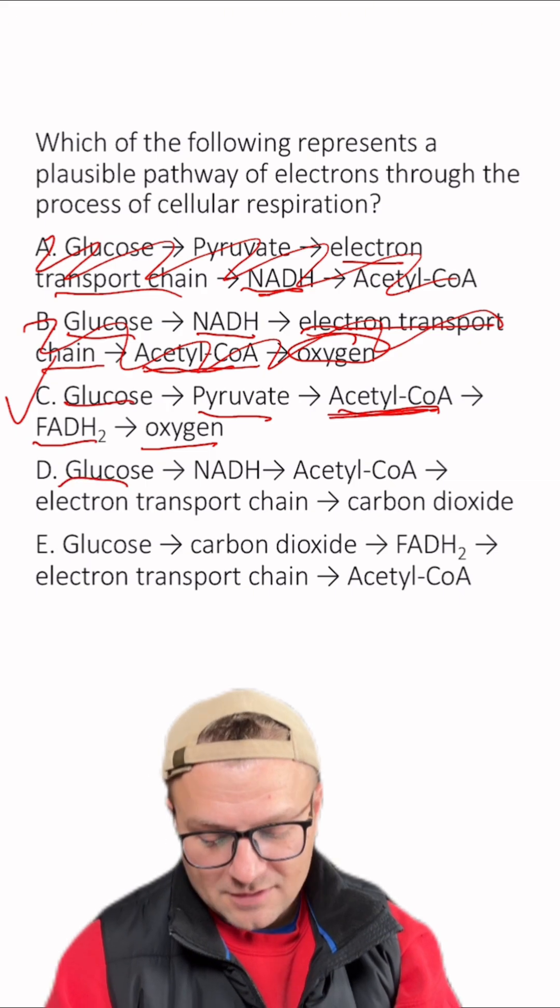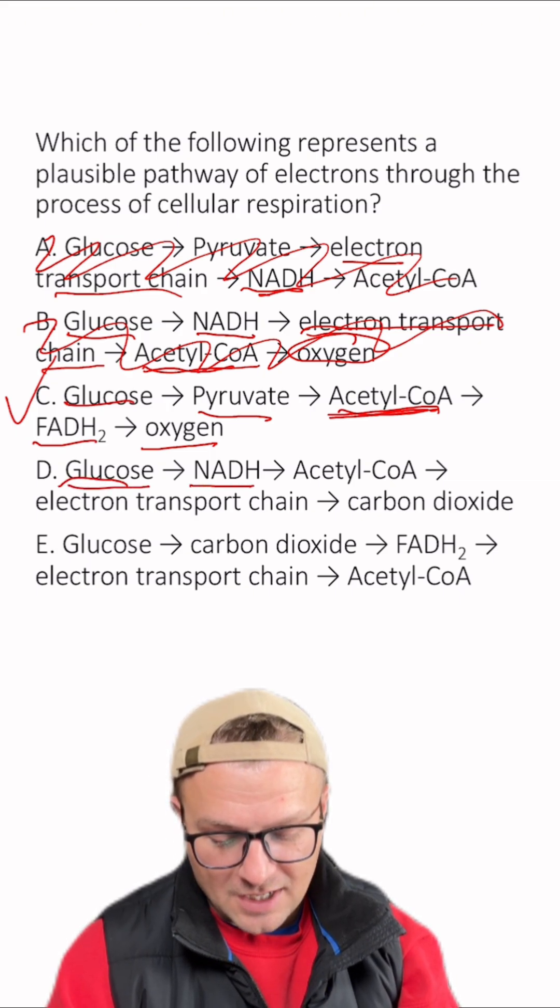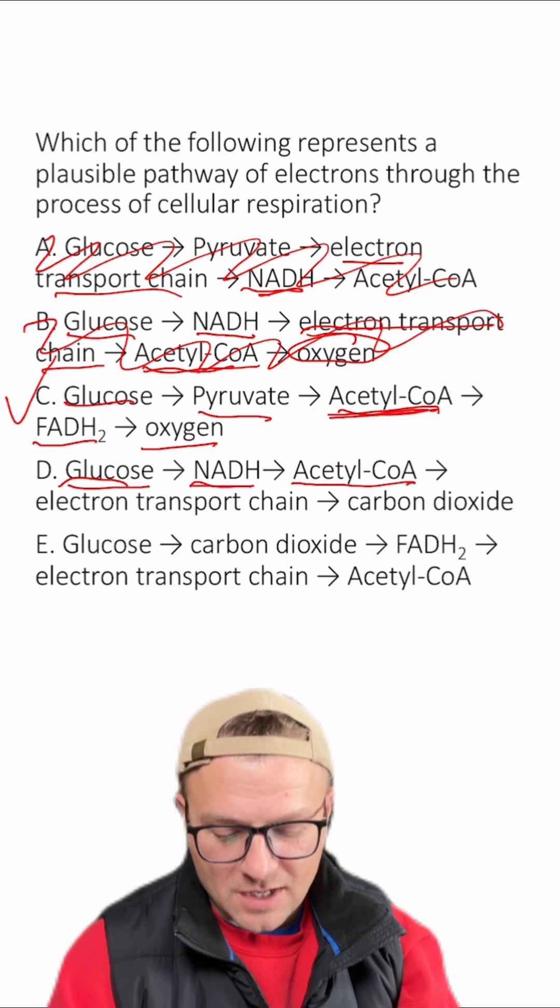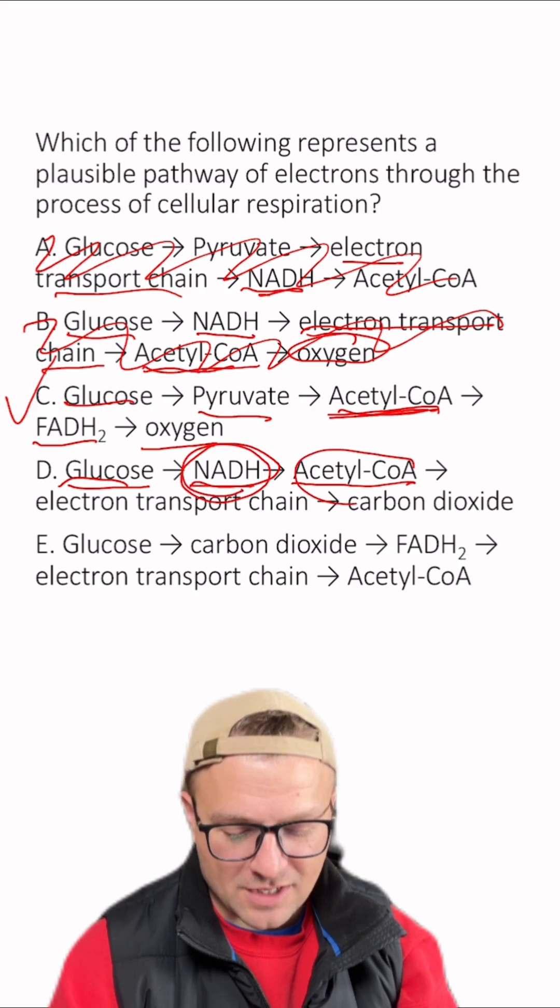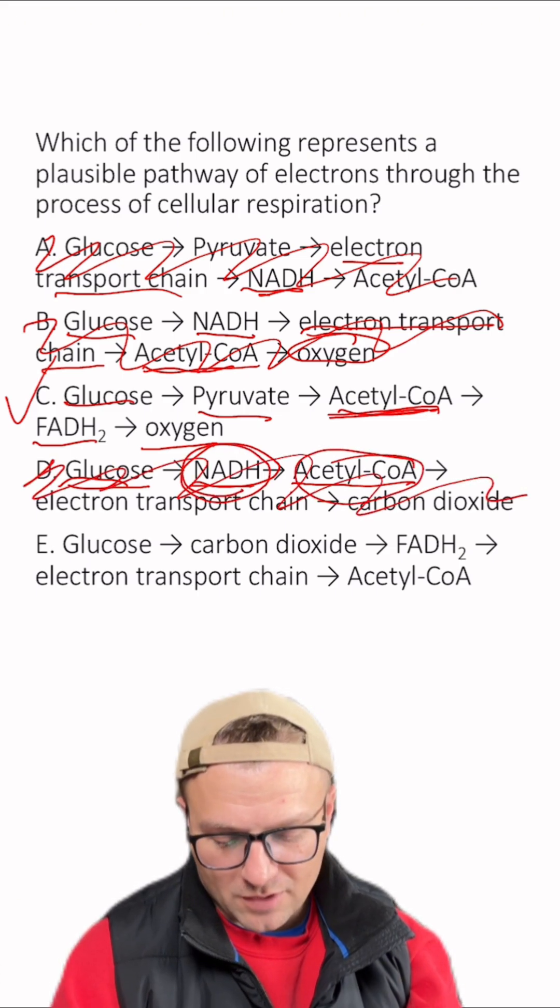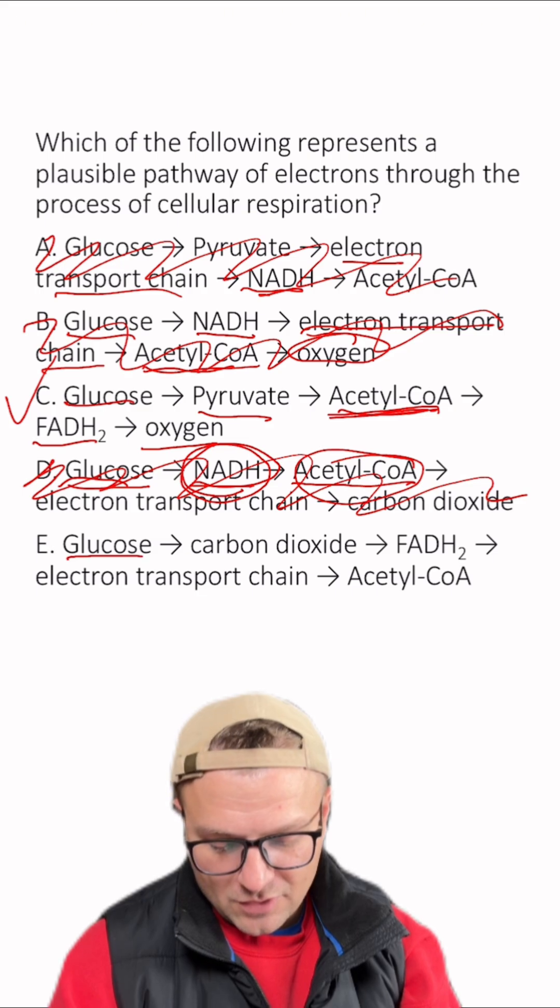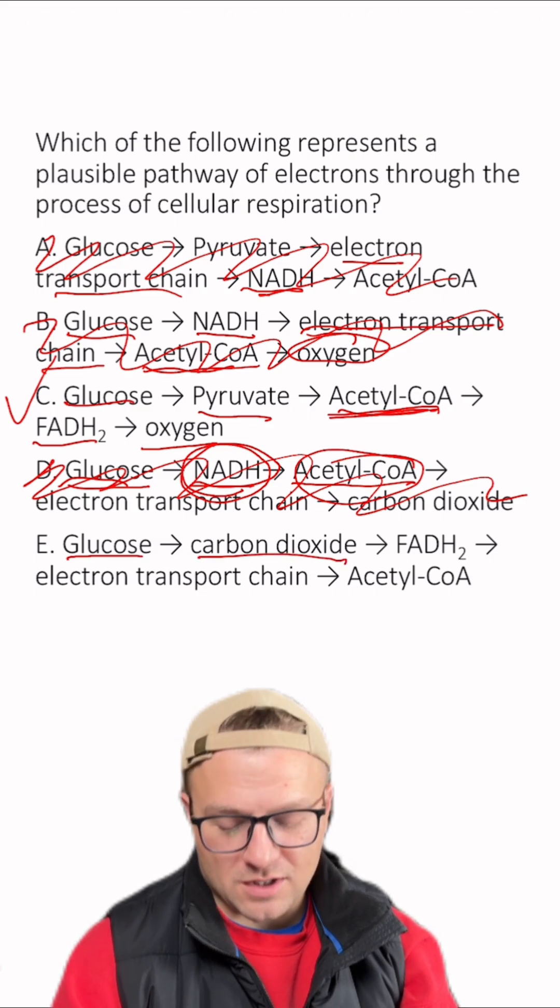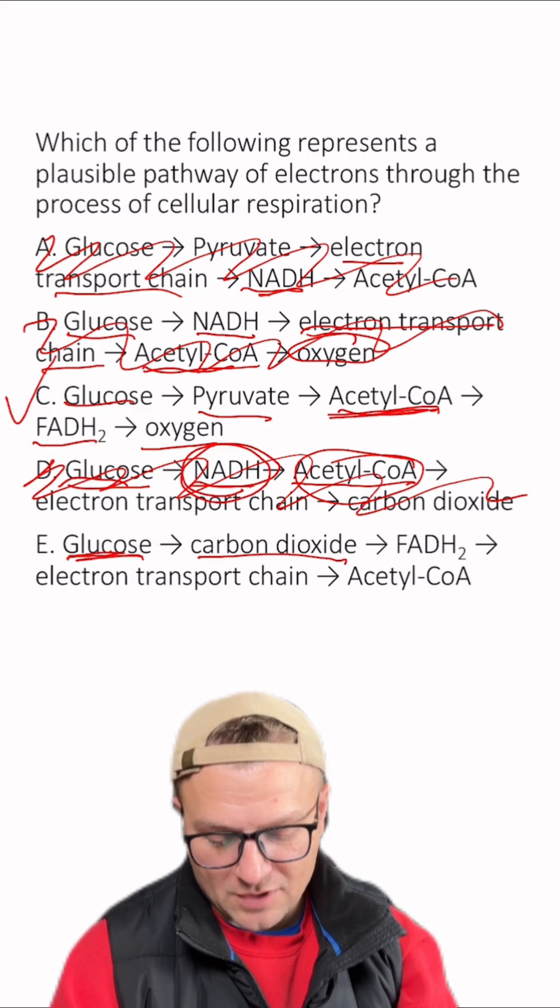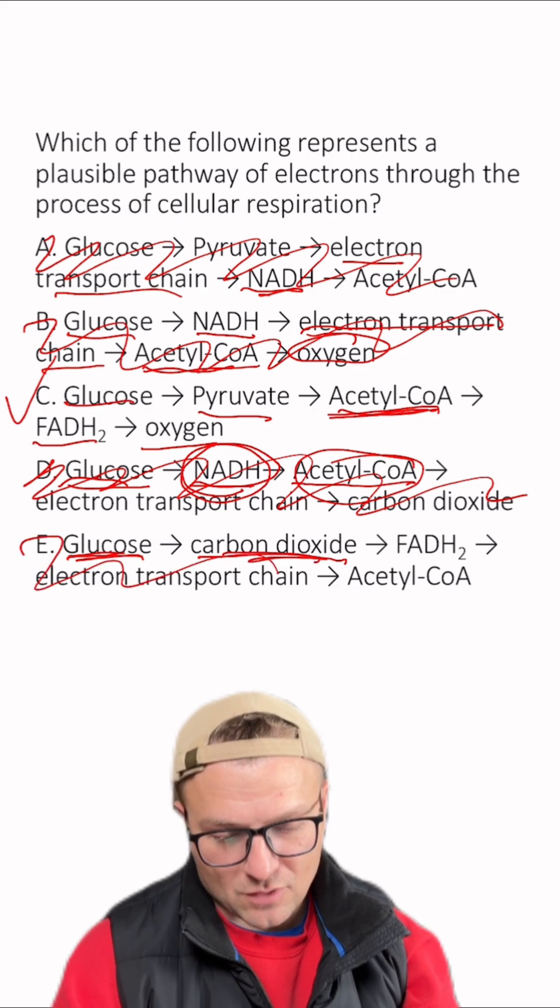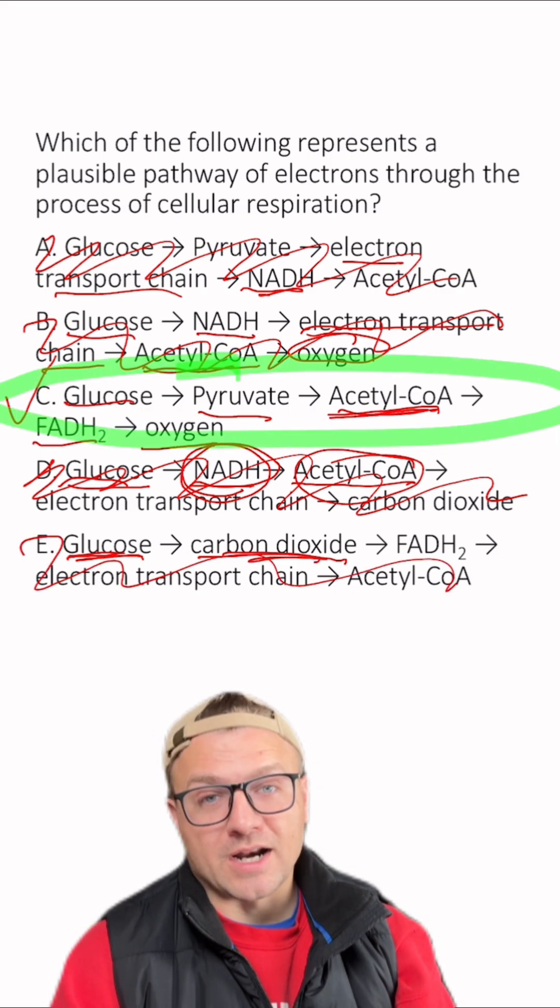Let's check to make sure D and E are wrong. D says glucose, NADH, acetyl-CoA, nope. The acetyl-CoA doesn't come after NADH, so D is wrong. And then E. Glucose, carbon dioxide, no. The electrons won't skip from glucose to carbon dioxide, so E is wrong, which means C is the right answer.